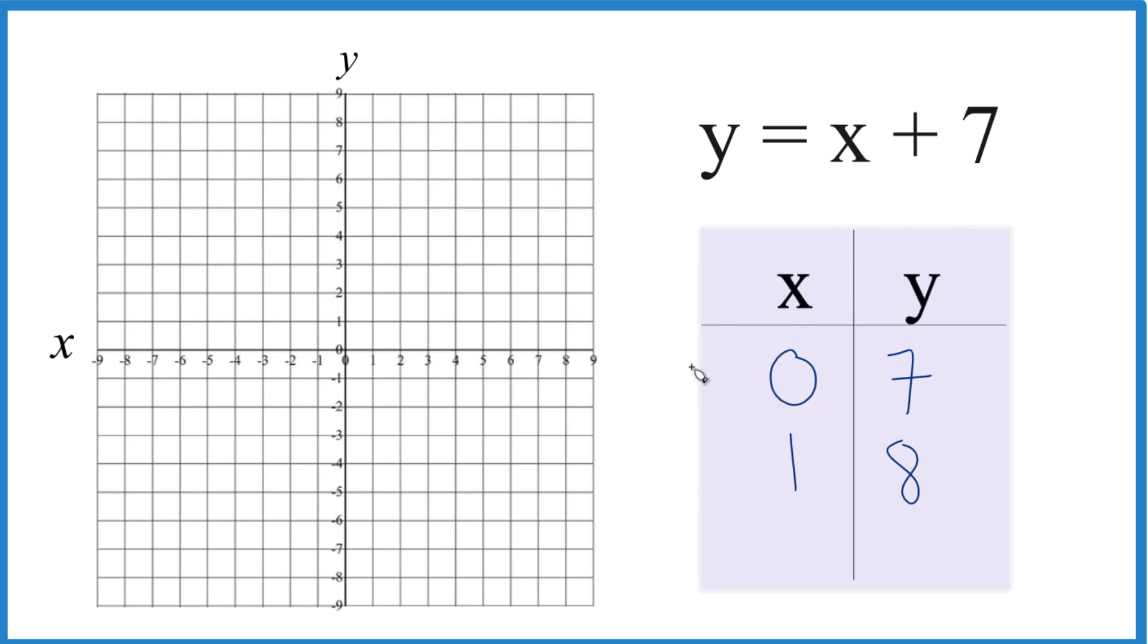I'm just making these numbers up, but I want them to fit on the graph. My graph only goes up to 9 on each axis. How about negative 1? So if x is negative 1, negative 1 plus 7, that's just going to be 6.